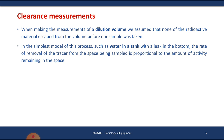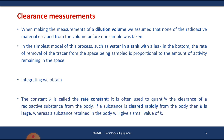The equations for clearance measurement are: dA(t)/dt = -k·A(t), and integrating this gives A(t) = A₀·e^(-kt), where k is the rate constant that quantifies the clearance rate of the tracer. If the substance is cleared rapidly from the body, k is large; if the substance is retained in the body, k is very small.